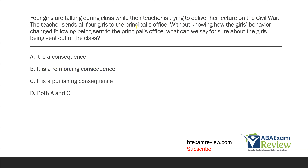Four girls are talking during class while the teacher is trying to deliver her lecture on the Civil War. The teacher sends all four girls to the principal's office. Without knowing how the girls' behavior changed following being sent to the principal's office, what can we say for sure about the girls being sent out of class? The question is really asking: what do we know about that consequence? They were talking during class and got sent out — it's a consequence. In order to determine the effects of a consequence, we need to know future behavior. In this case, we don't. We just know they got sent out. We know it was a consequence. We know for sure A is right — it is a consequence.